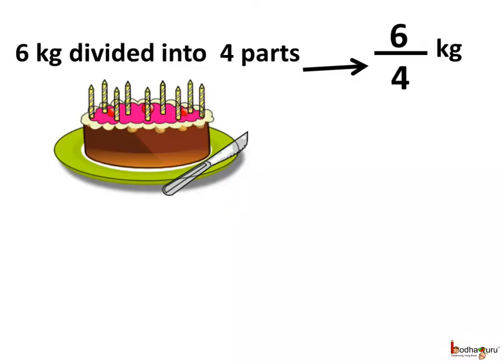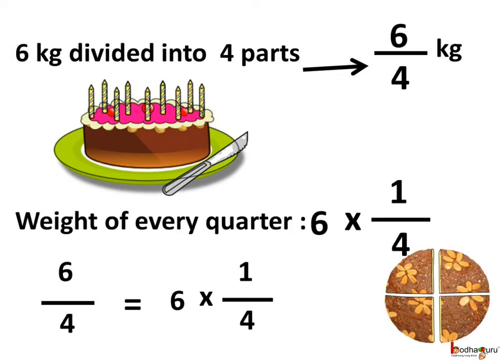Now we know about the division of integers. We cut a 6 kg pineapple cake in 4 equal pieces. So the weight of each piece would be 6 divided by 4, which is 6 by 4 kgs. Now, we divide the cake in 4 quarters or 4s. So the weight of each quarter would be 6 multiplied by 1 by 4 kg.